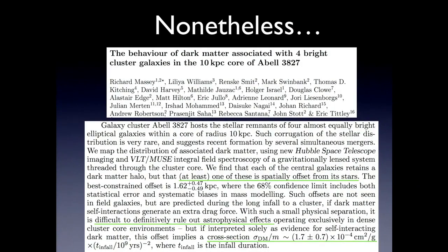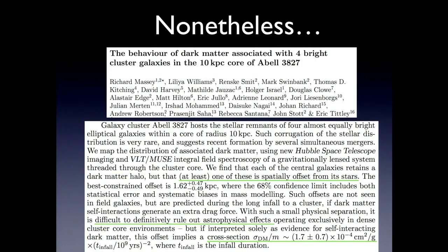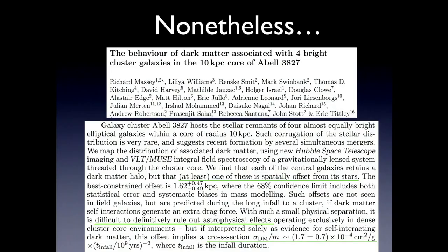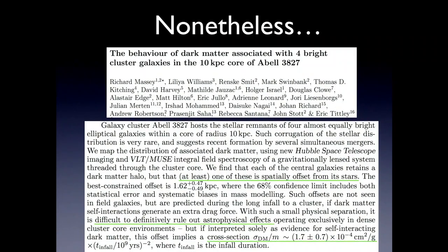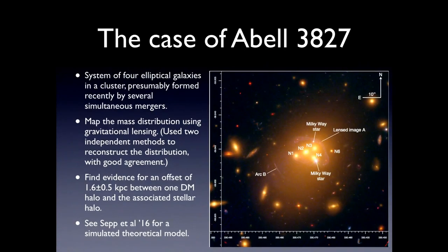Nonetheless, there was a paper last year by these authors that looked at galaxy cluster system ABEL 3827, and they found that there did appear to be some offset between one of these merging dark matter halos and its stars. Given the systematics, it's difficult to definitively say this isn't some astrophysics rather than dark matter physics. But if you interpret it as dark matter physics, it would give you not a bound but an estimate for a self-interaction cross-section of about 2 times 10 to the minus 4 centimeters squared per gram - seemingly small compared to the bullet cluster constraint of about 2 centimeters squared per gram.